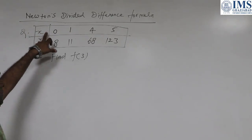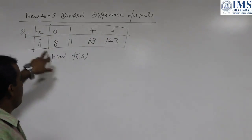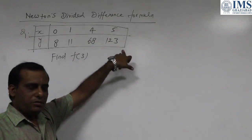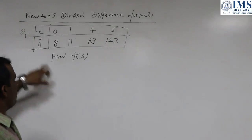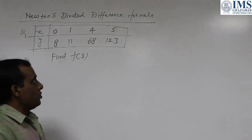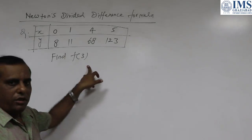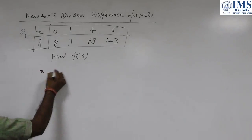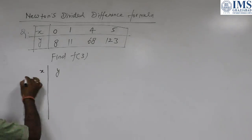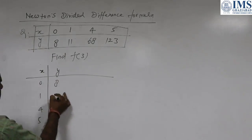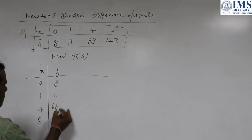The values of x are 0, 1, 4, 5 and the corresponding values of y are 8, 11, 68, 123. We will calculate the value of y for x equals 3, that is we need to find f(3). So first of all we need to calculate the divided differences. The x values are 0, 1, 4, 5 and y values are 8, 11, 68, 123.